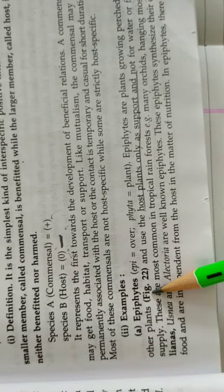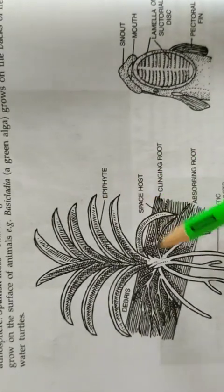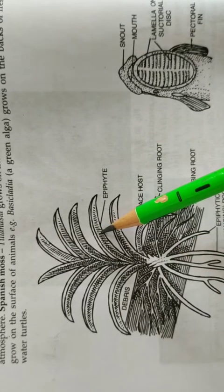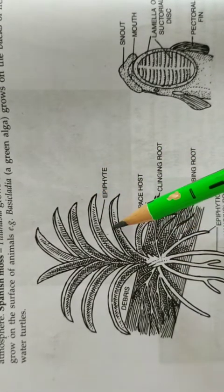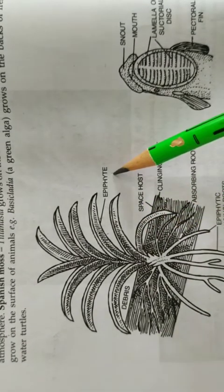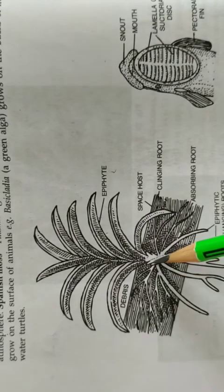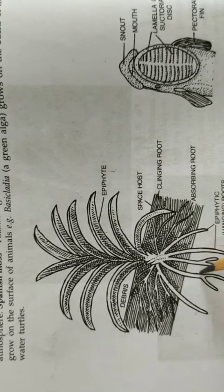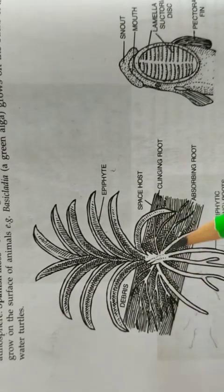The first example is epiphytes — plants which grow over other plants. The commensal plant does not depend on the host for food, unlike parasites which derive nourishment from the host. The commensal plant only gets space and shelter. It grows special hanging roots through which it can take water from the atmosphere. It is only taking shelter and surface from the host plant.